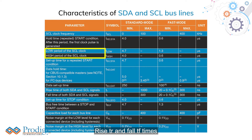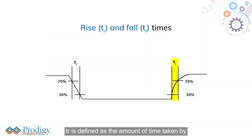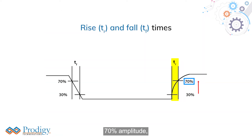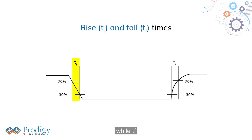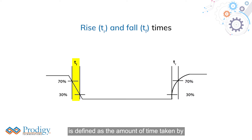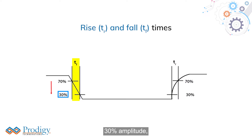Rise time TR and Fall time TF: TR is defined as the amount of time taken by the rising edge to reach 70% amplitude from 30% amplitude for either SDA or SCL, while TF is defined as the amount of time taken by the falling edge to reach 30% amplitude from an amplitude of 70%.